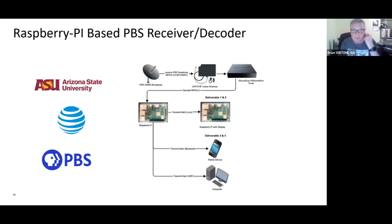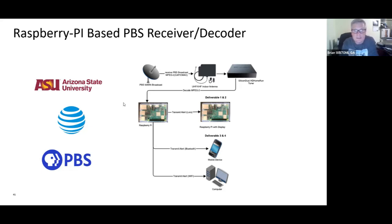We worked on a project with Arizona State University PBS to develop a Raspberry Pi PBS receiver and decoder. This would allow you to actually receive a PBS signal in your local area, use this decoder, and then see the alerts on your mobile device or on your computer — just another way of getting and viewing the alerts.